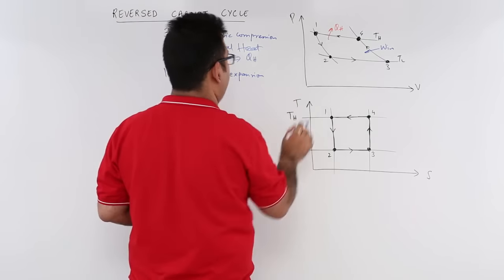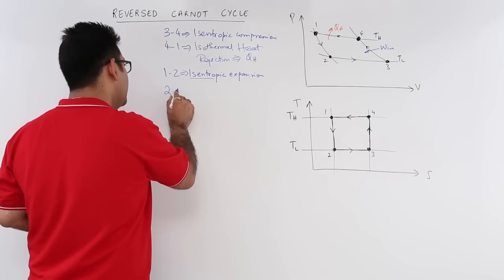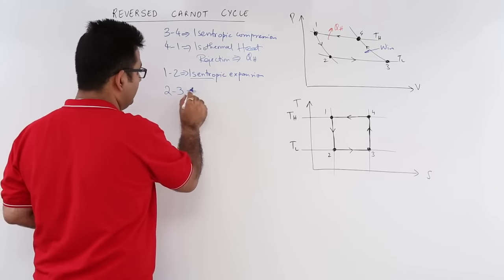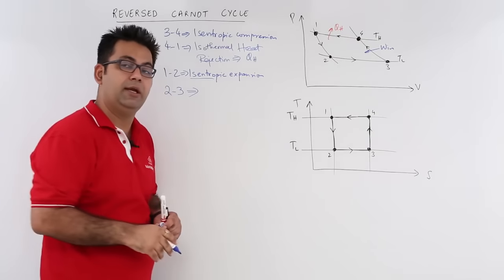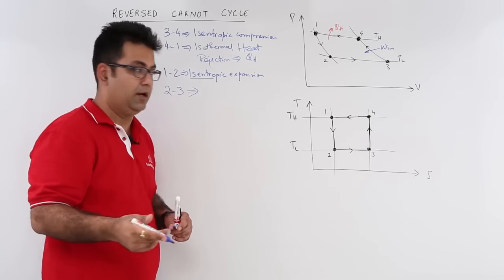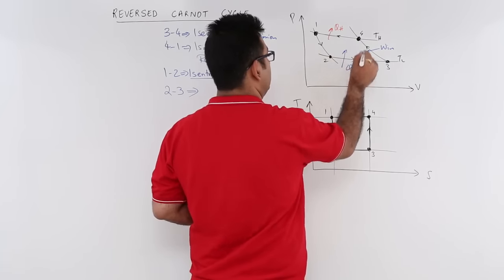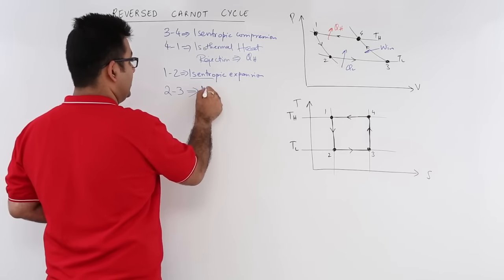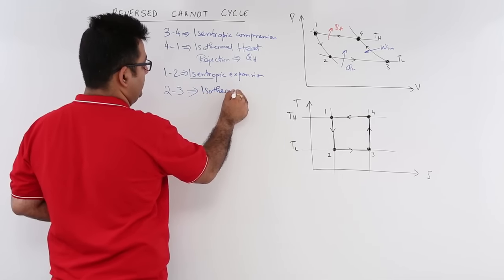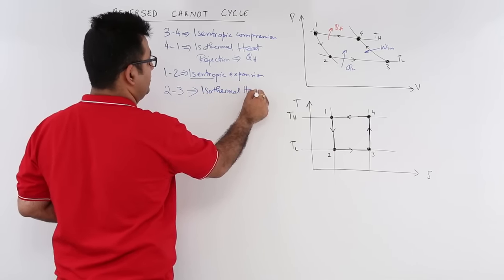Now 2 to 3: after expansion is complete, it goes into the evaporator and absorbs heat. This is isothermal heat absorption.